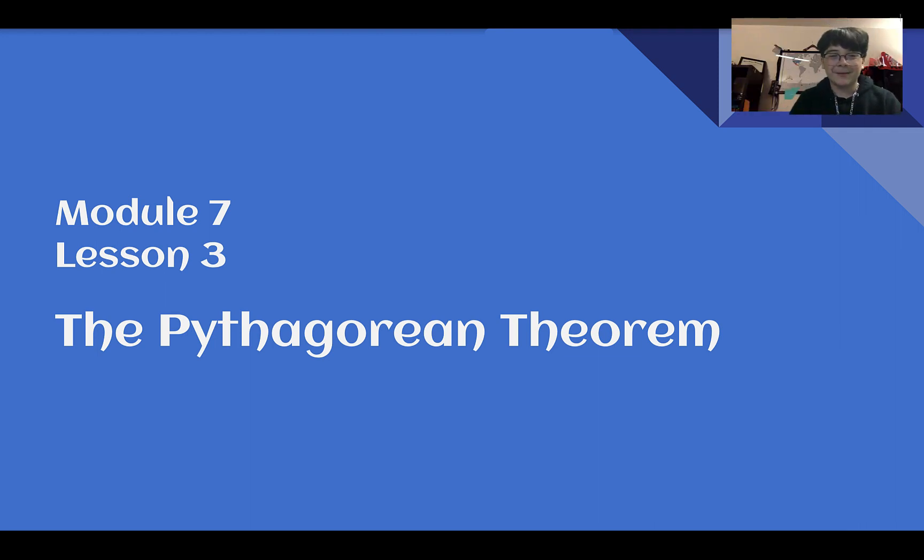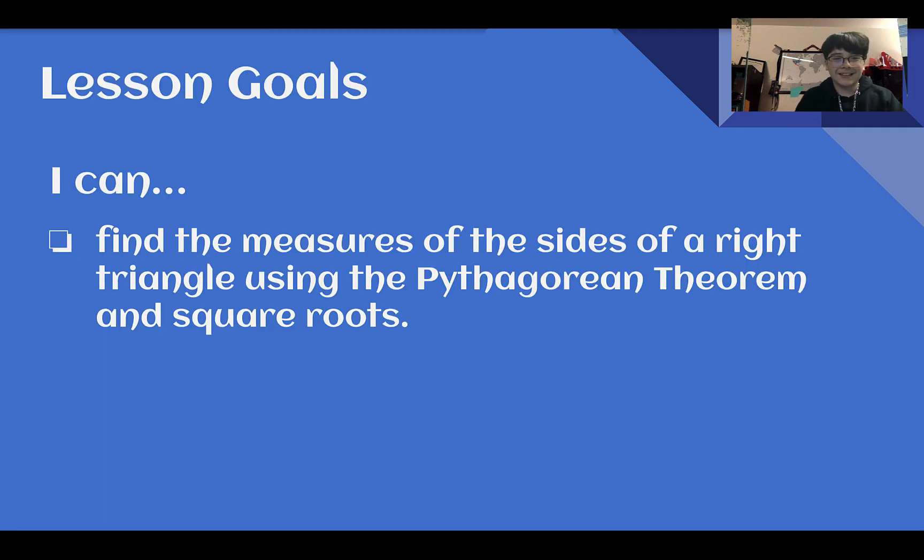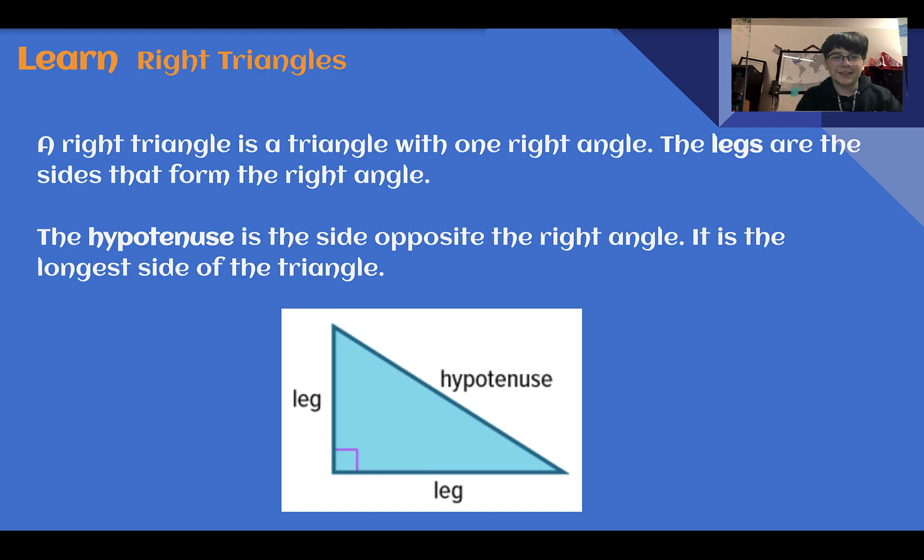Hey there, Mr. Rui here and this is 8th grade module 7 lesson 3, the Pythagorean Theorem. After this lesson you need to be able to find the measures of the sides of a right triangle using the Pythagorean Theorem and square roots. Let's learn.